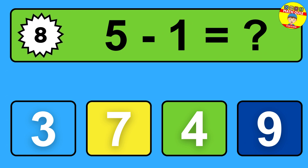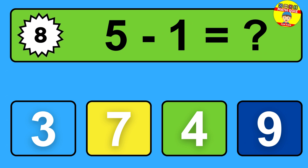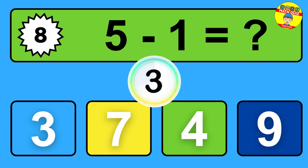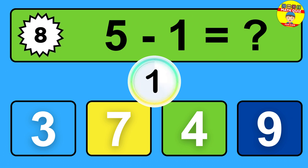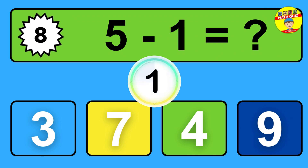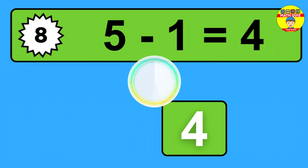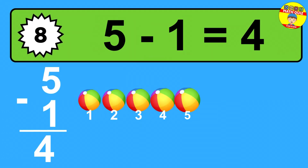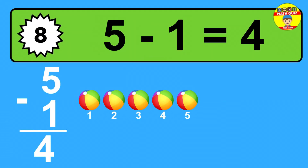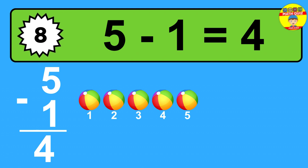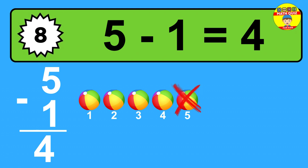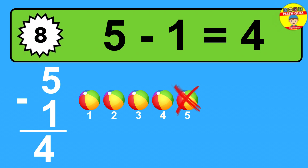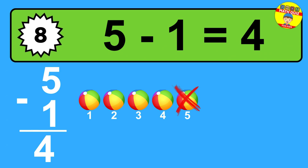Question eight: five minus one equals what? The answer is five minus one is four. Let's count it: one, two, three, four.